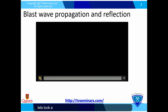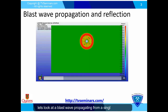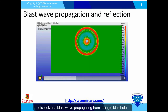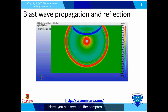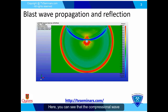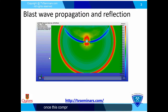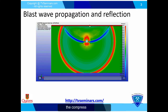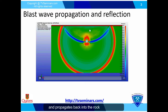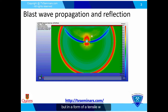Let's look at a blast wave propagating from a single blast hole. Here you can see the compressional wave propagating radially around the blast hole. However, once the compressional wave reaches the free surface, it reflects and propagates back into the rock burden area, but this time in the form of a tensile wave.